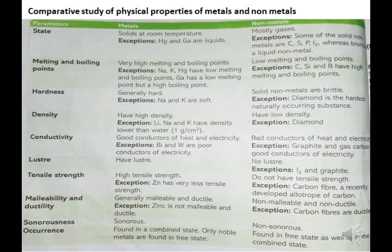Malleability and Ductility: metals are generally malleable and ductile. Malleability means a metal can be beaten into thin sheets with a hammer. Exception — Zinc is not malleable at room temperature. Non-metals are non-ductile. Exception — carbon fibers are ductile.